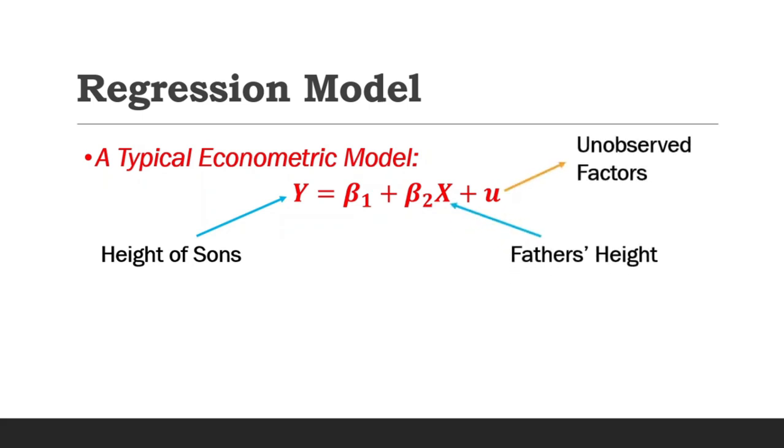And u represents the unobserved factors, which are those factors that also affect the height of son but are not captured in the model. Some of these factors include nutrition, father's health, among others.